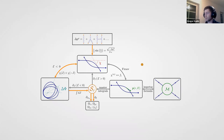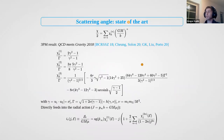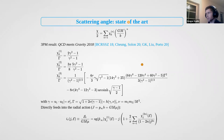Where do we stand right now? We are at the third post-Minkowskian order, meaning the third order in G, the gravitational coupling, computing the scattering angle. I'm only talking about the conservative part, and we're only considering here the exchange of potential gravitons. We've already seen this result — it has been checked by several groups by now and I think we can pretty much be sure that's what it should be.